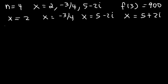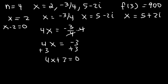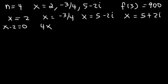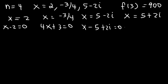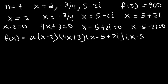If we move the 2 to this side, the first factor is x minus 2. For the negative three-fourths, let's multiply both sides by 4 to eliminate the fraction: 4x equals negative 3, so 4x plus 3 equals 0. For the complex zeros, x minus 5 plus 2i equals 0, and x minus 5 minus 2i equals 0. So f of x equals a times x minus 2 times 4x plus 3 times x minus 5 plus 2i times x minus 5 minus 2i.